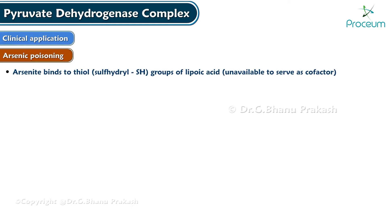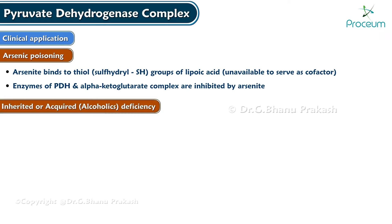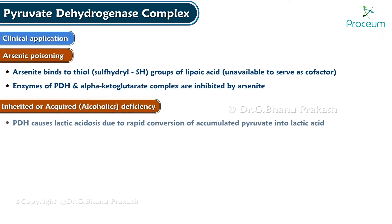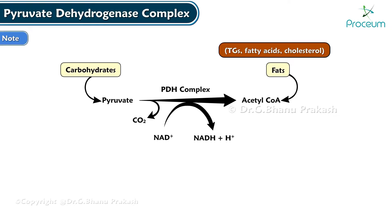In arsenic poisoning, arsenite binds to the thiol (sulfhydryl) group of lipoic acid and makes it unavailable to serve as a cofactor. By this way, enzymes of the pyruvate dehydrogenase complex and alpha-ketoglutarate complex are inhibited by arsenite. Inherited or acquired deficiency of PDH causes lactic acidosis due to rapid conversion of accumulated pyruvate into lactic acid. Pyruvate is derived from carbohydrates, and acetyl coenzyme A mainly from fats — triglycerides, fatty acids, and cholesterol.